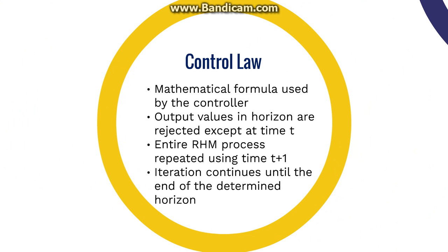The control law is the mathematical formula used by the controller based on the computations of the objective function and process model. The control law receives the output values calculated for the horizon from the objective function and rejects all values except for those at time t. This, in turn, sends a signal to the controlled variables, and the entire process is repeated again at new outputs calculated from the new inputs, outputs, and constraints. The control law rejects all the values except time t plus one, and these iterations are continued until the end of the horizon is met.